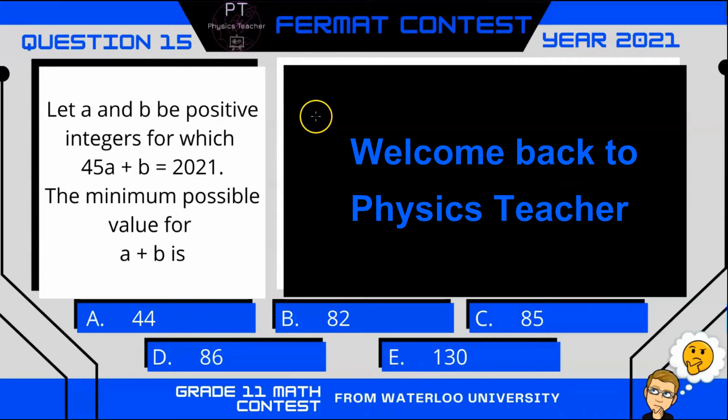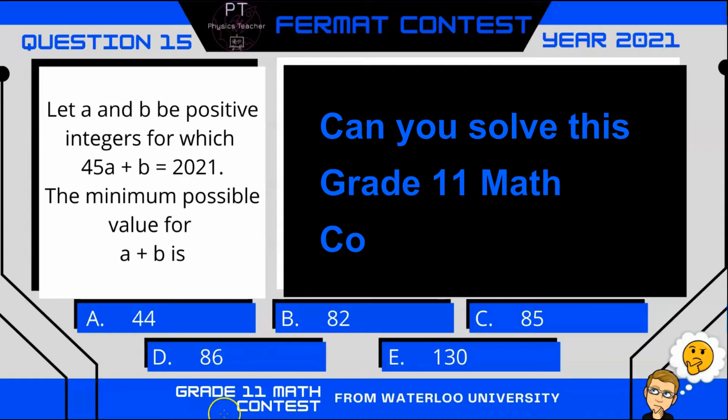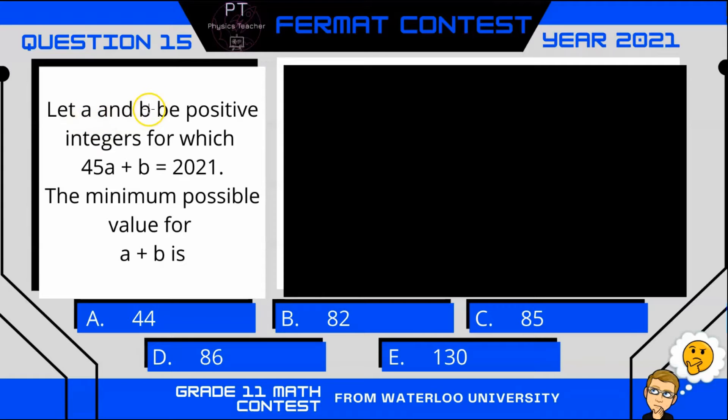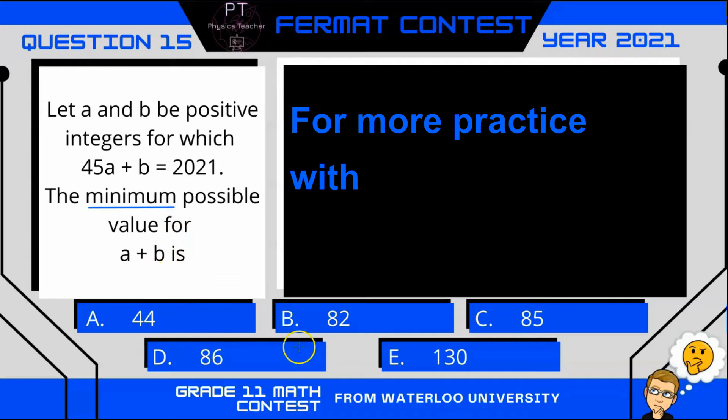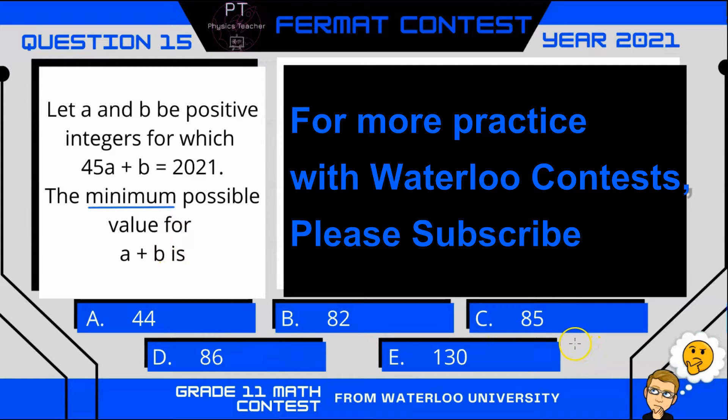Hi, welcome back to Physics Teacher. This was a question on the Fermat Contest, a Grade 11 math contest offered by Waterloo University. We have a and b as positive integers where 45a + b = 2021. The minimum possible value for a + b is what? Give it a try and I'll be right back with the solution.